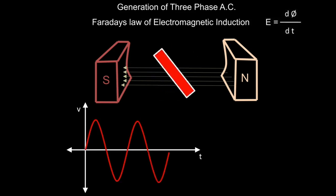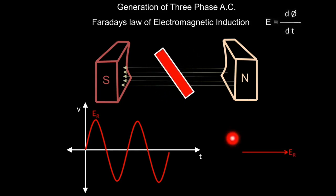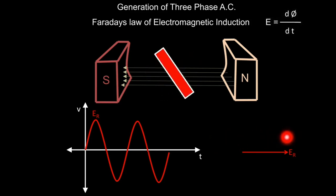We are having one variation — one cycle, one waveform. ER is the voltage induced in this conductor; since this conductor is represented by red color, we denote it as ER. ER is the EMF induced in the red conductor, and here we have drawn its phasor — it is a reference phasor, just a straight line parallel to the x-axis.